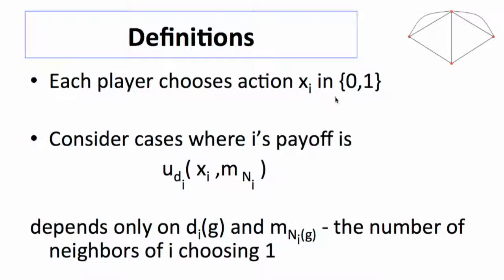We've got each person choosing an action in zero, one, and we're going to consider a situation where your payoffs depend on your action. So a person i's payoff depends on their action. It's also going to depend on the number of individuals, number of neighbors of i that choose one - so how many of my neighbors chose one - and it'll depend on my degree, how many neighbors I have. So if I have 100 neighbors, it might be different than if I have three neighbors and two of them are choosing action one. Two out of three is different than two out of 100. So I might care differently depending on how many neighbors I have.